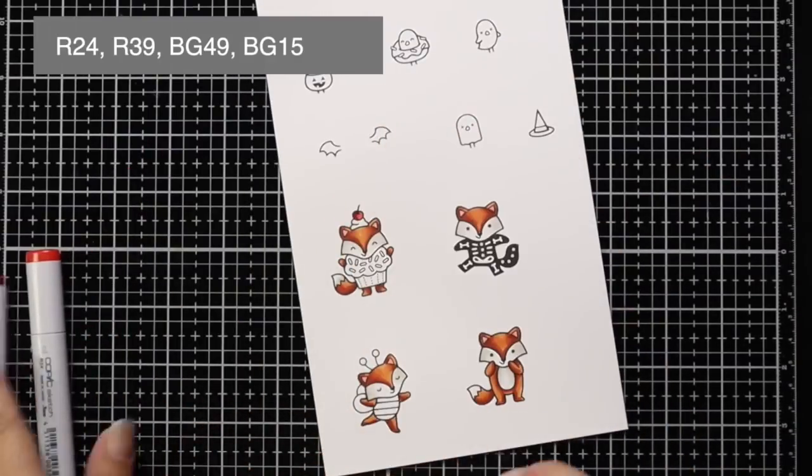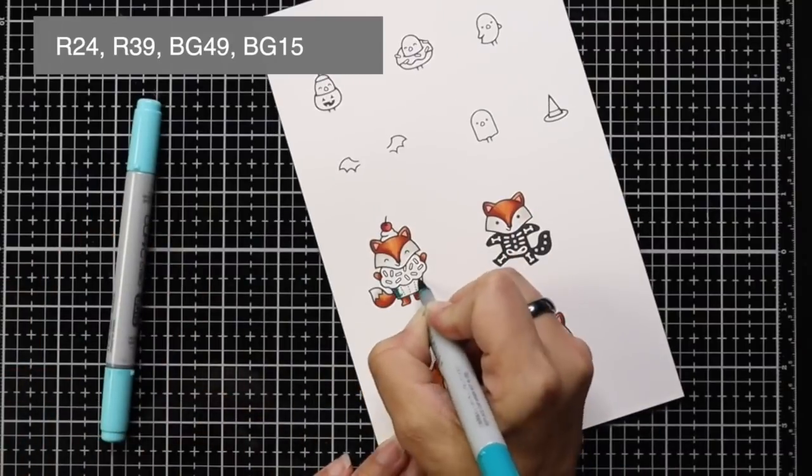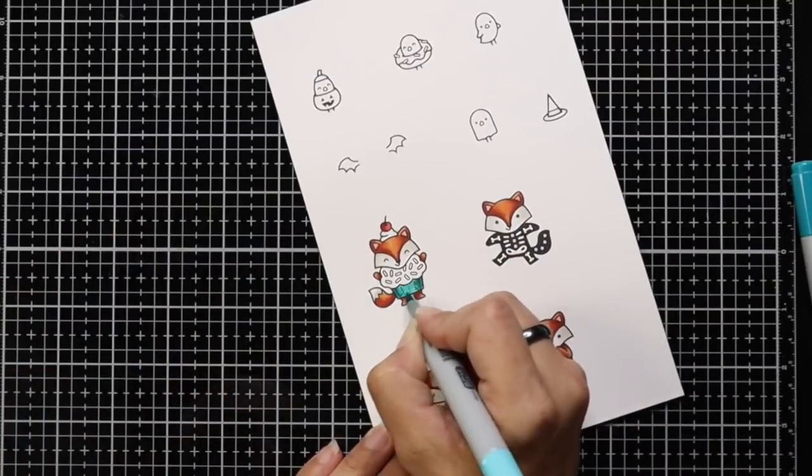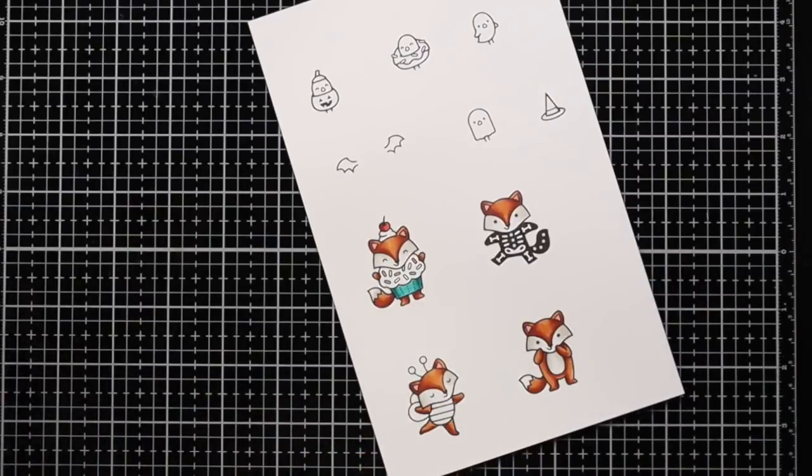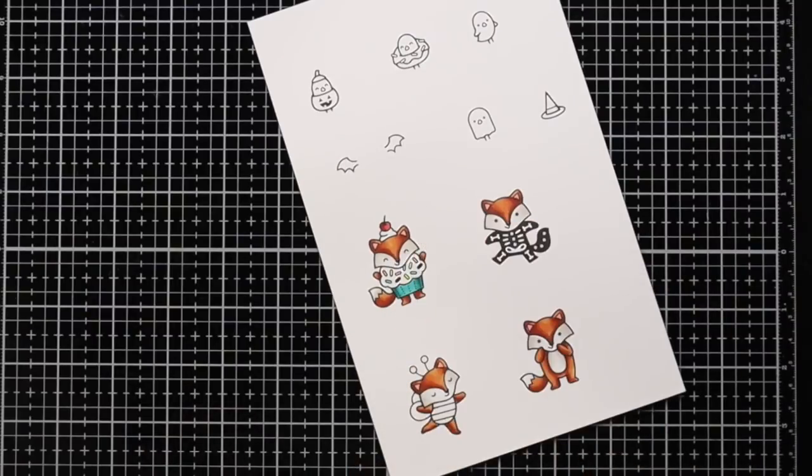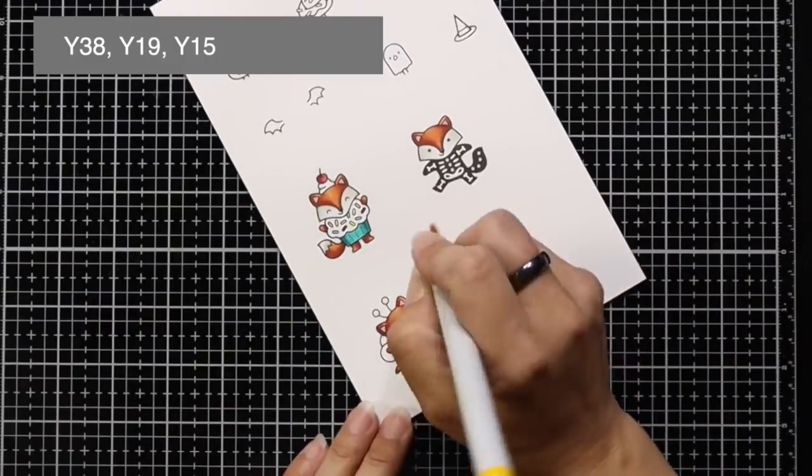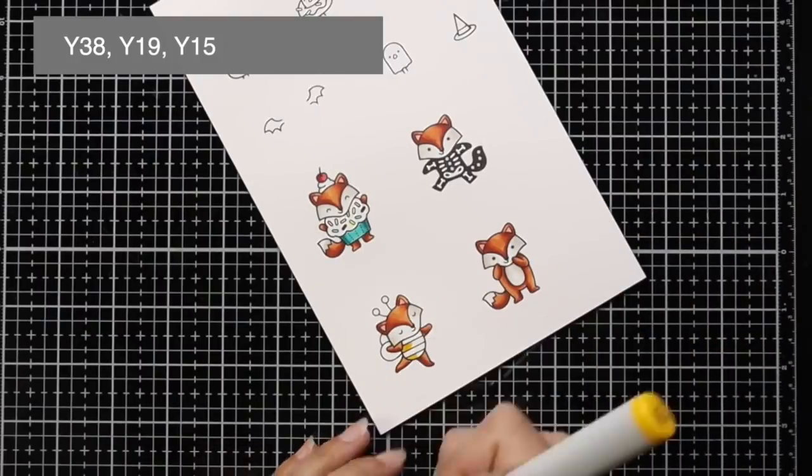The cherry, I have R24, R39, and then the cupcake, I have BG49 and BG15. And then like I said, those little sprinkles on the cupcake, just bringing in some random colors, whatever I happen to grab out of my stash, and I left the rest of the cupcake white.